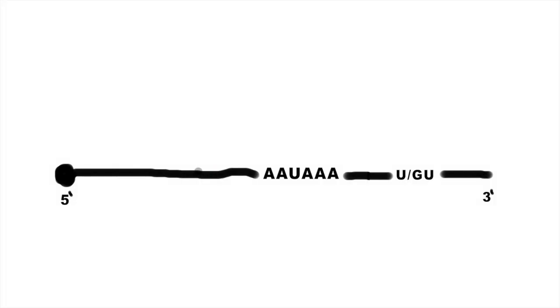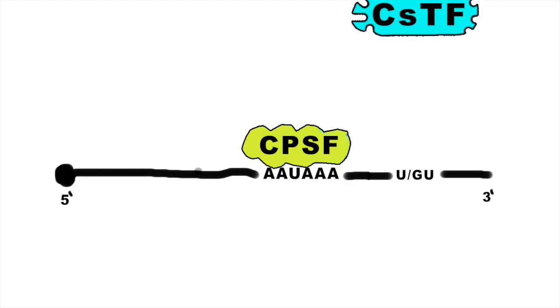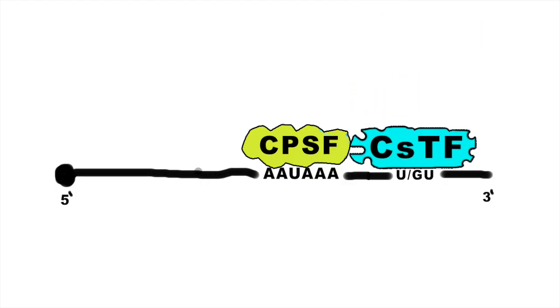In this diagram we can see the pre-mRNA molecule from the complex. It has got poly-A signal in the form of AAUAAA and it has also got U or GU rich region downstream of poly-A signal. So it's here where the interaction occurs. On poly-A signal the CPSF binds, and then this CPSF recruits CstF on mRNA, which binds with the U or GU rich region of pre-mRNA.